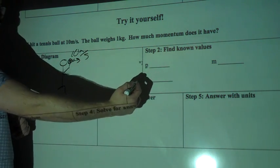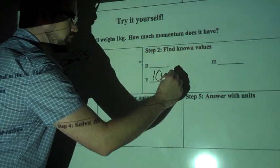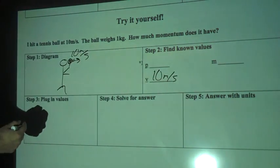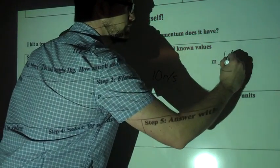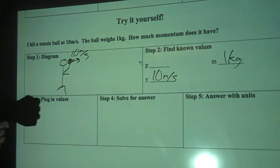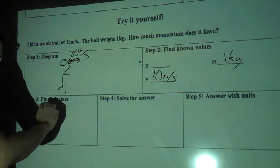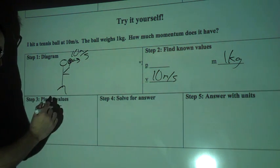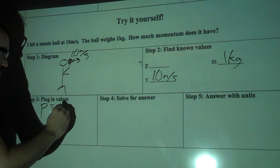So we're going to plug in our known values. Velocity is 10 meters per second, my mass is 1 kilogram. Plug in values, so my equation is P equals M times V.